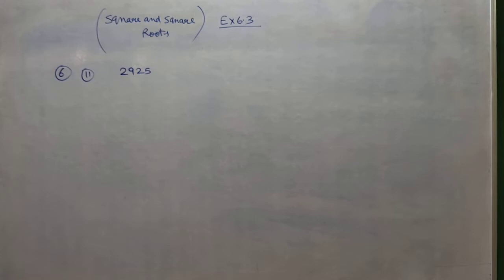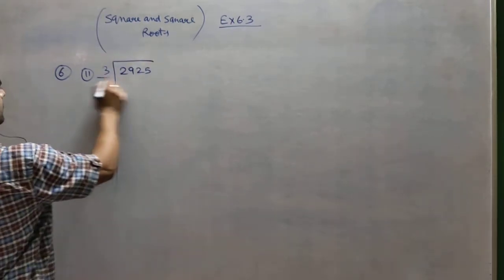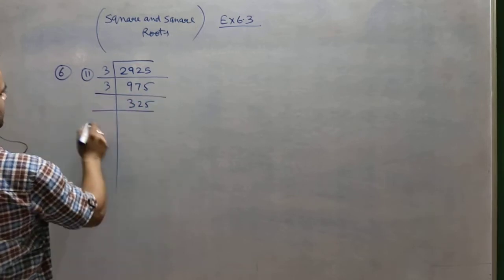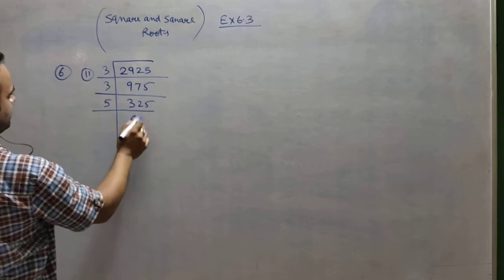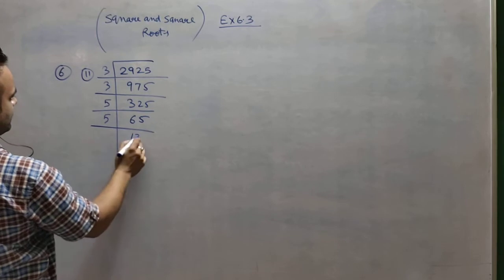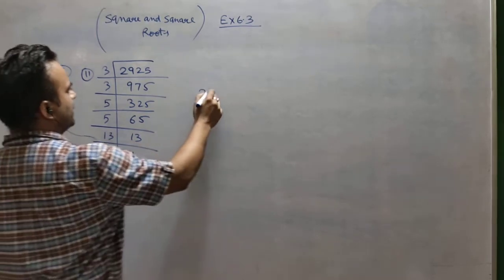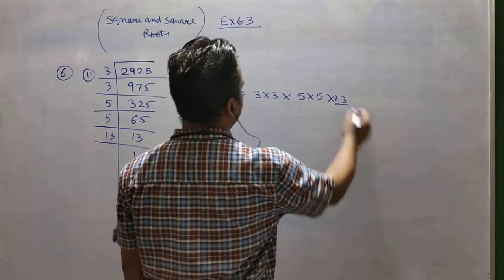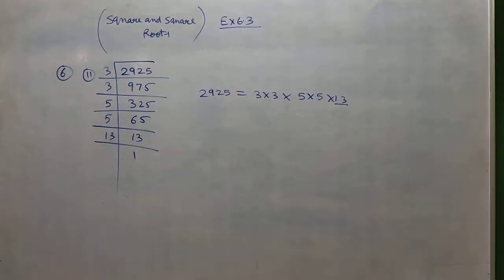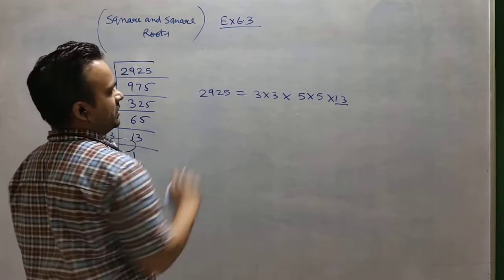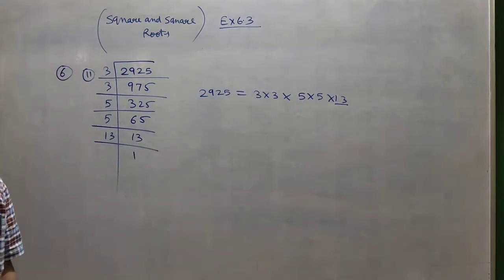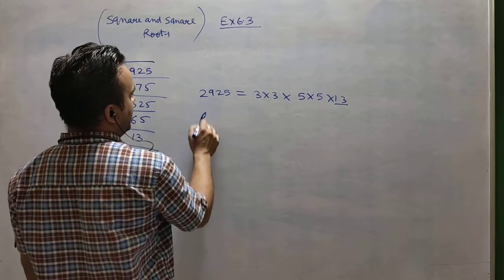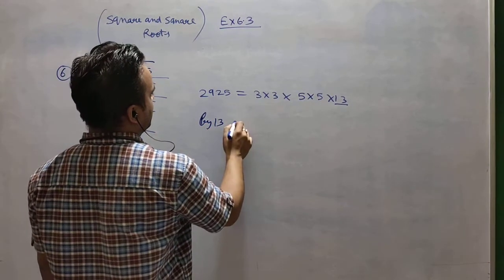Dividing 2925: first divided by 3, then again by 3, then by 5. So 2925 contains 3×3, 5×5, and 13. Since 13 is not in pair form, 2925 is not a perfect square. If the question asked by what number to multiply, we would say 13. But since it asks by what number to divide, we divide by 13.